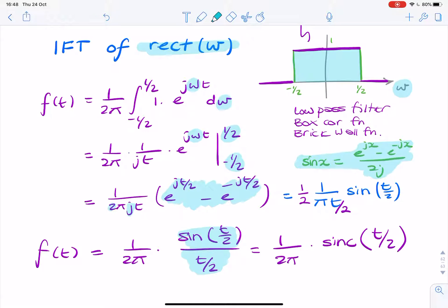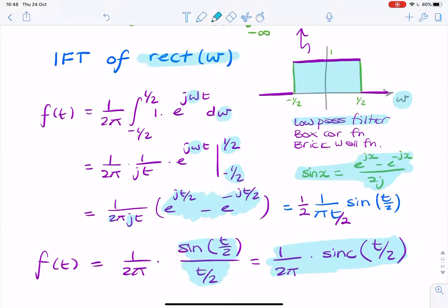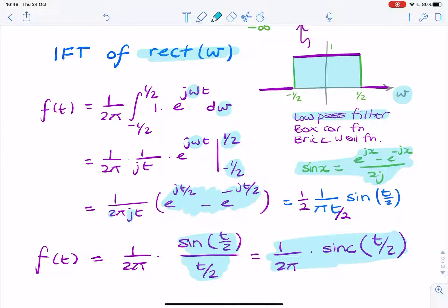And that is the final answer. That's what we were expecting. That's our sinc function. And that is the time domain representation of what in the frequency domain is a low-pass filter. So a low-pass filter, or a rect function in the frequency domain, can be represented in the time domain as a sinc function.